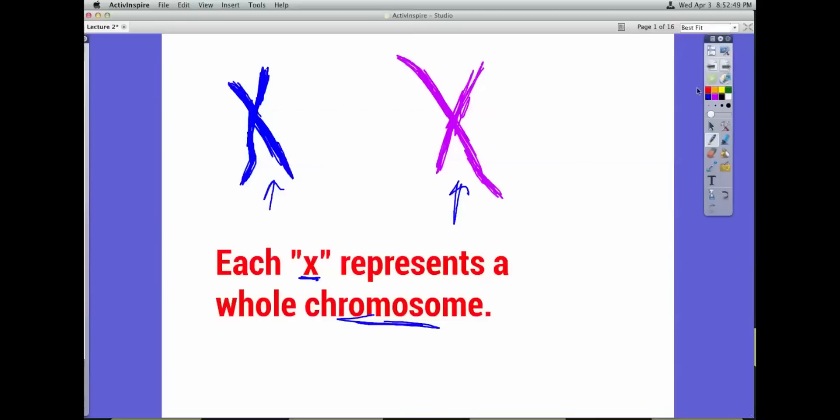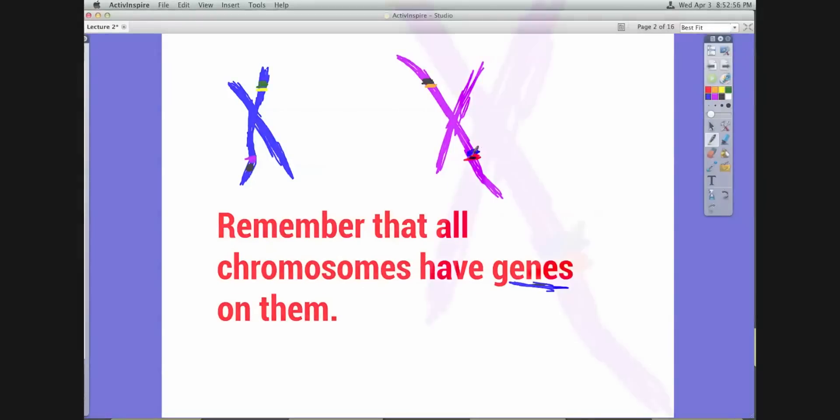The blue and the purple both represent an entire chromosome. Remember that all chromosomes have genes on them. Those little colorful things on the picture are genes.